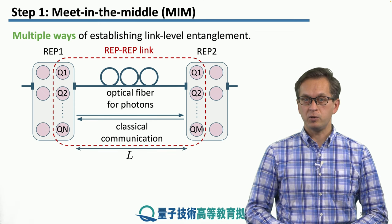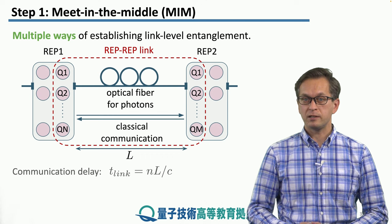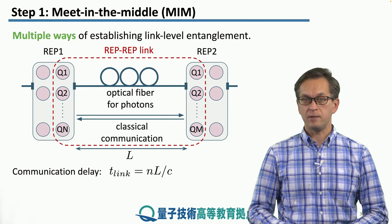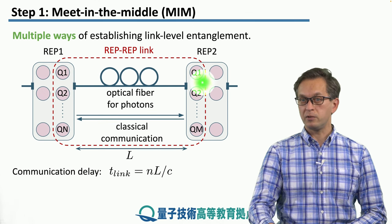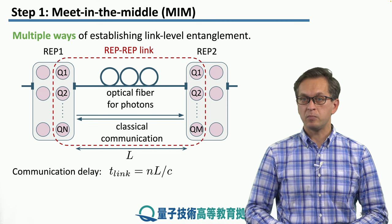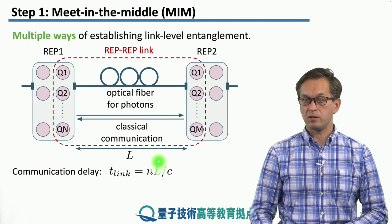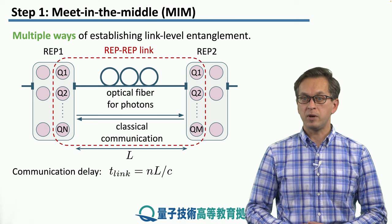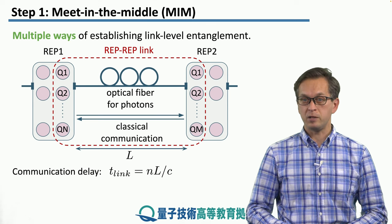The distance between the two repeaters is given by capital L. There will be two characteristic timescales that we care about. The first is called the communication delay, which measures how long it takes for a signal from repeater 1 to reach repeater 2, or vice versa. It's simply the distance divided by the speed of light in the fibre. From basic optics, the speed of light in fibre is given by N divided by C, where N is the refractive index of the fibre material and C is the speed of light in vacuum.